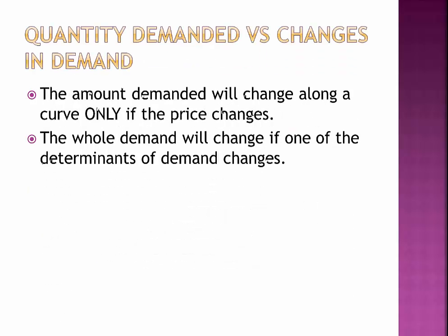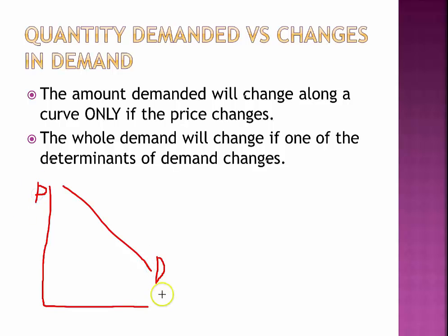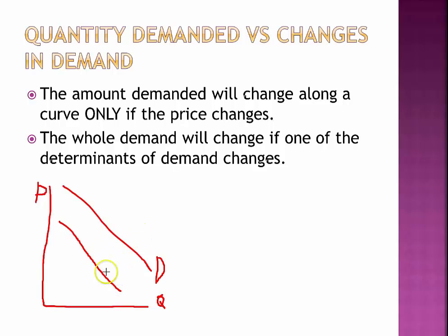Now, quantity demanded versus change in demand. The amount demanded will change along a curve only if price changes. On a demand curve with price on the y-axis and quantity on the x-axis, if I lower the price the quantity changes, and if I increase the quantity the price decreases — but notice the curve stays the same; I'm just moving along it. The whole demand curve will shift if one of the determinants of demand changes. For example, if this is the market for shirts and suddenly people prefer sweaters, demand decreases and the whole curve shifts to the left. At every point there's a lower quantity than before. But if you raise or lower the price, you only move along the curve.